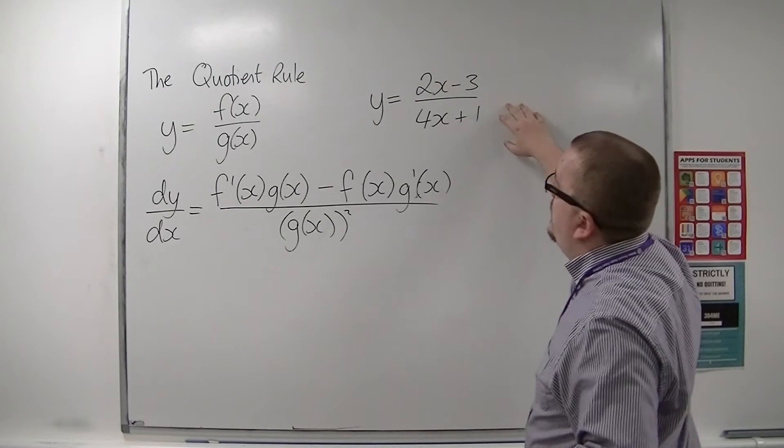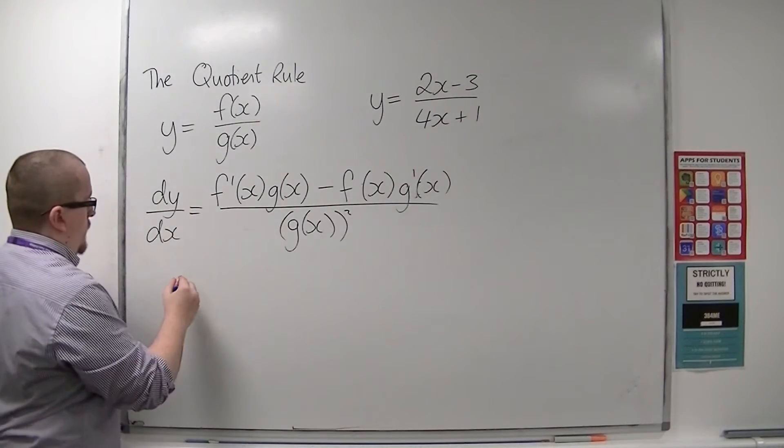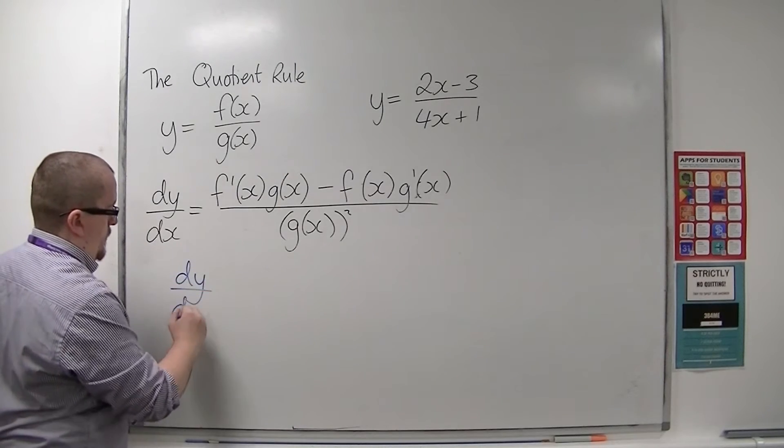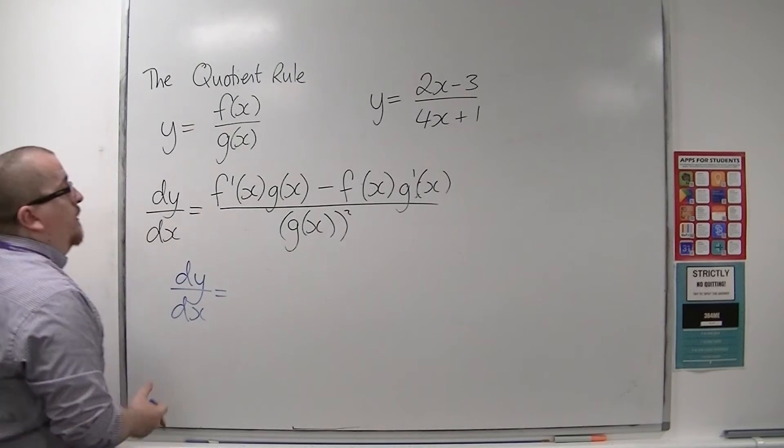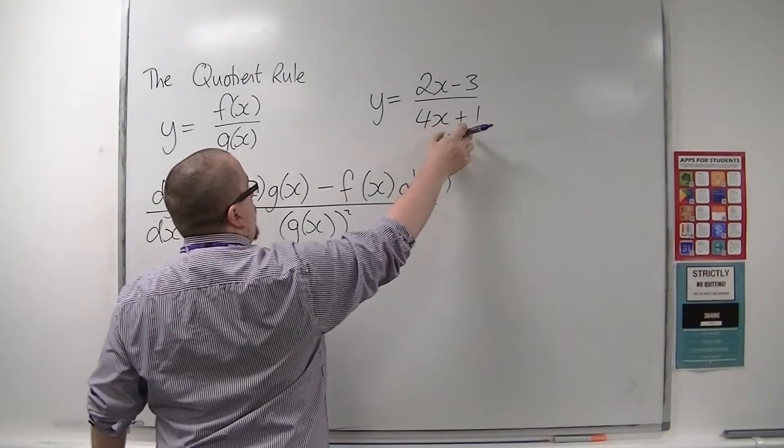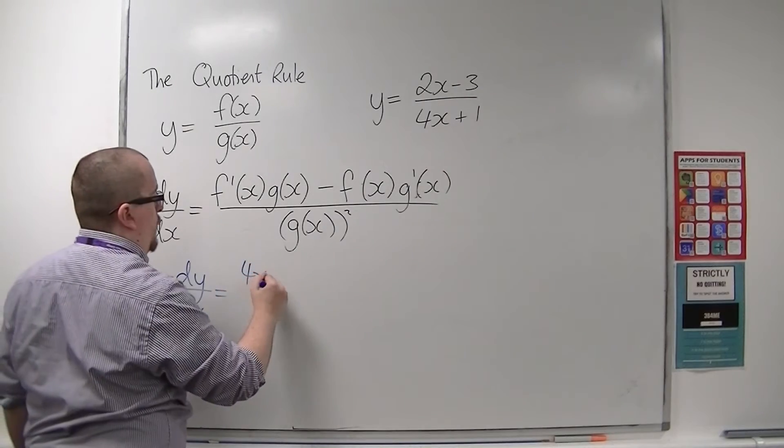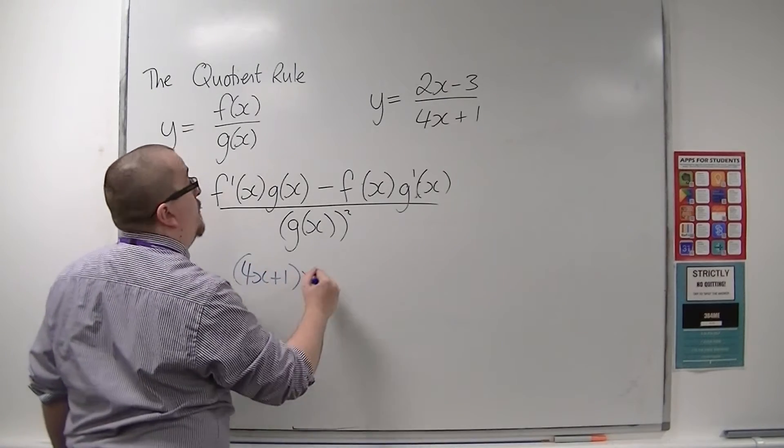So if we needed to differentiate this, then start with the bottom, start with the denominator: 4x plus 1 times the derivative of the top, so 4x plus 1 times 2.